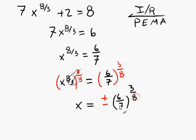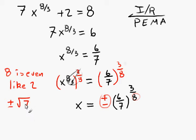Wait, what? 8 is even. Just like 2. So, we have a plus or minus here. For the same reason we have, say, plus or minus the square root of 7 as an example. So, whenever we have an even power in the denominator of this exponent, we need to write a plus or minus.